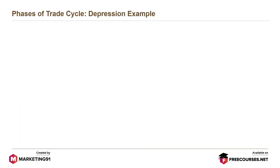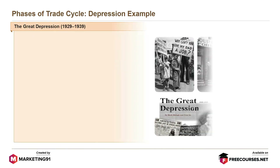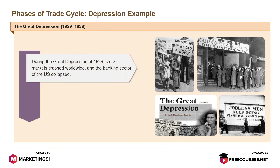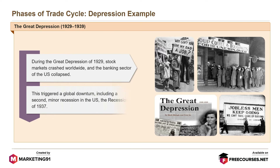An example of the depression phase is the Great Depression from 1929 to 1939. During the Great Depression of 1929, stock markets crashed worldwide and the banking sector of the US collapsed. This triggered a global downturn, including a second minor recession in the US — the recession of 1937.